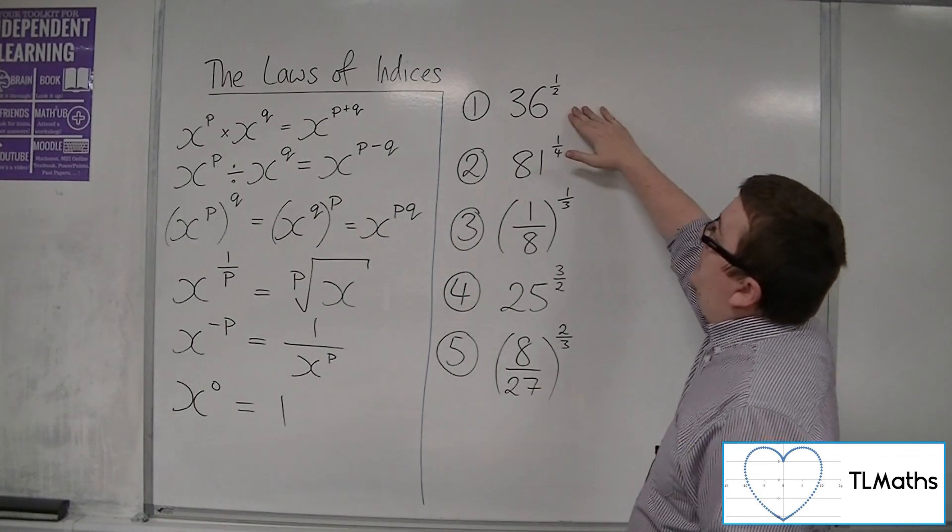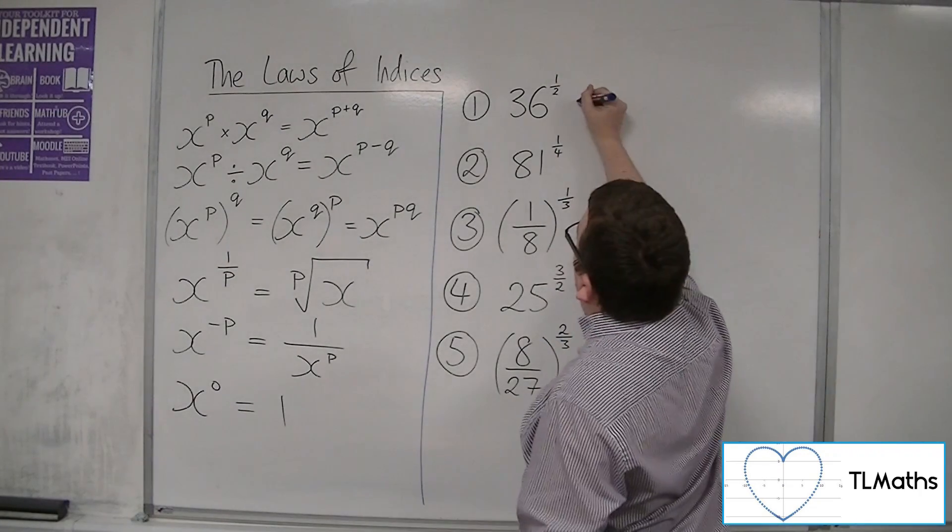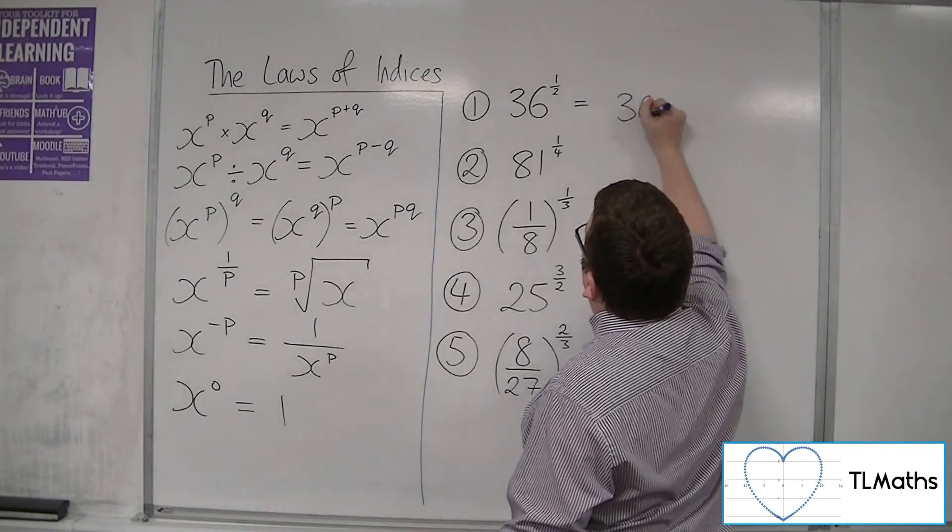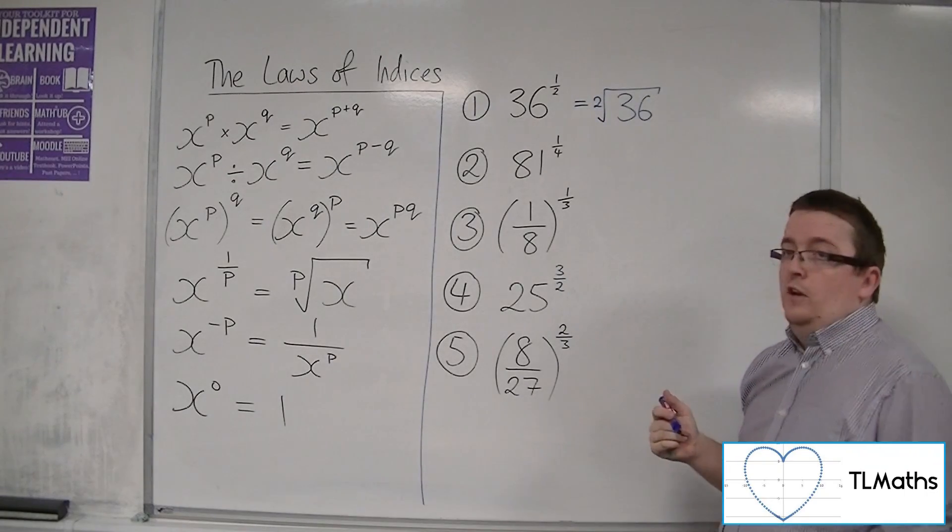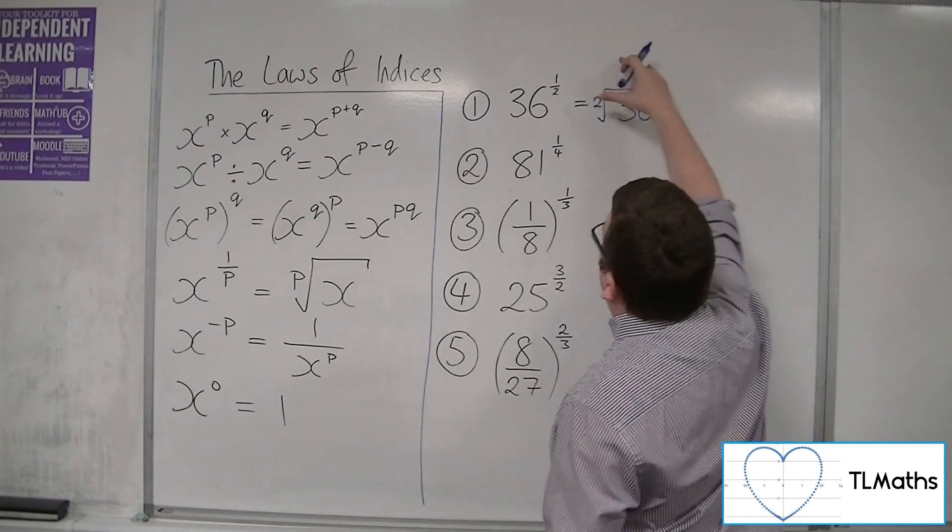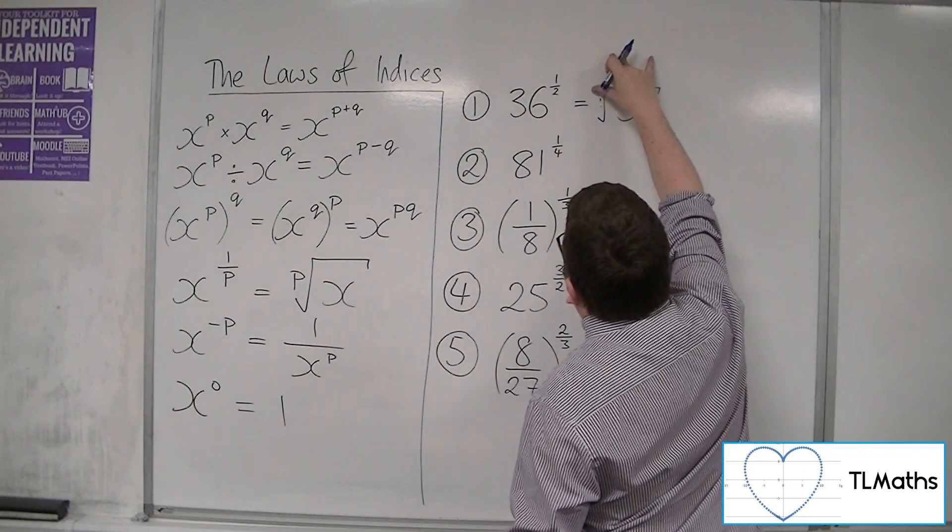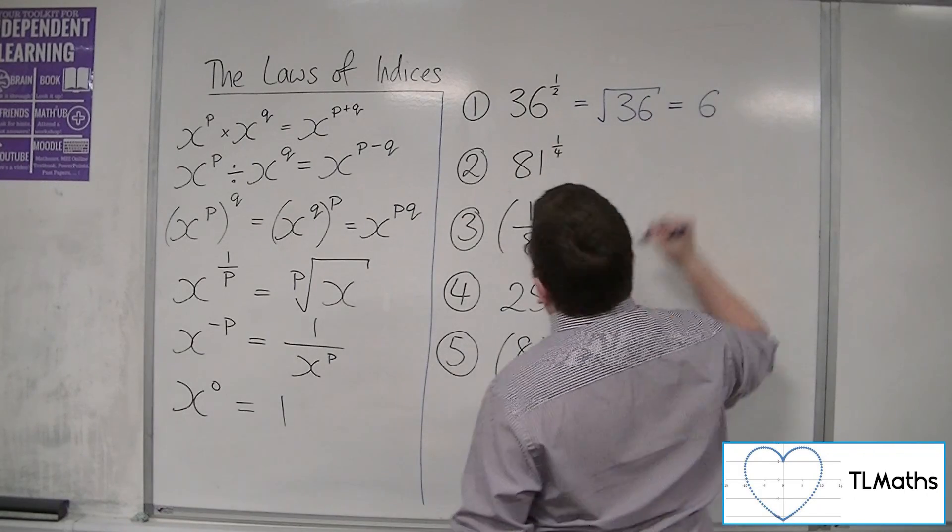So if we just start with 36 to the half, what that represents is the square root of 36, so the second root of 36. Now, we don't ordinarily write that 2, so let's get rid of that. So the square root of 36 is 6.